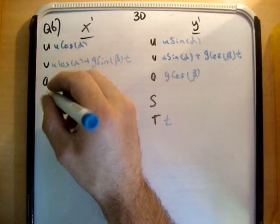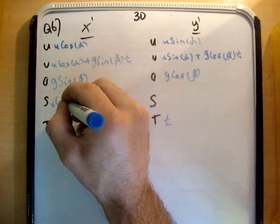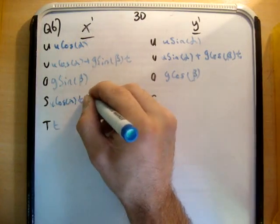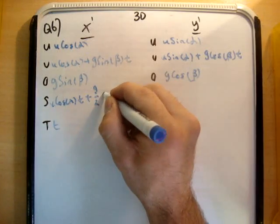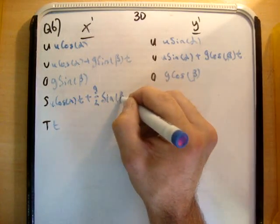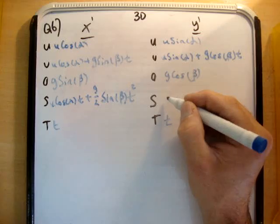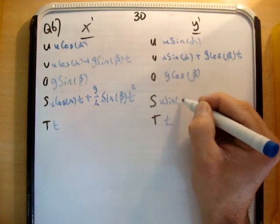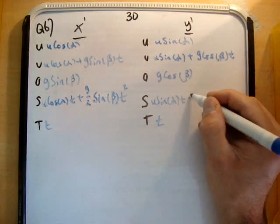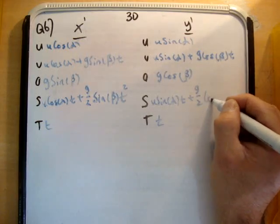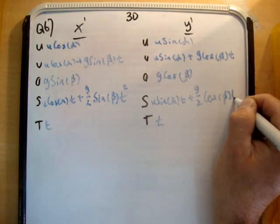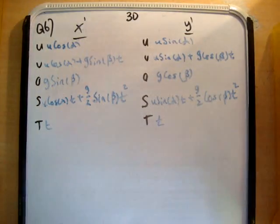And we get ut plus at squared for s. So we get u times g over 2 sine beta t squared, and we get u times the sine of alpha t plus g over 2 cos beta t squared. Something we've seen plenty of times.